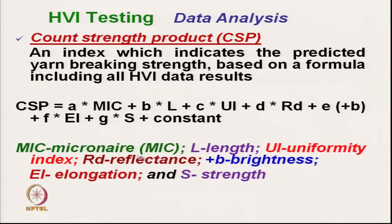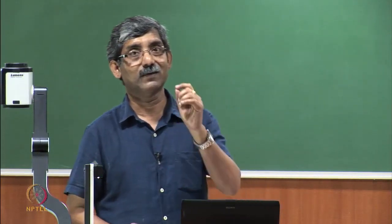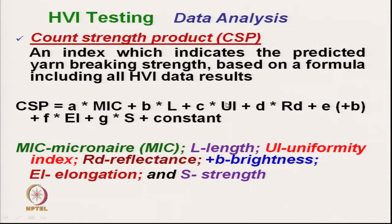In the CSP formula, MIC is micronaire value; along with length, uniformity index, reflectance, brightness, elongation, and strength, multiplied by coefficients A, B, C, D, E, F, G, H. For a particular type of fibre, these coefficients are not fixed because CSP also depends on twist level and machine type. A particular industry using HVI data can develop this equation for their particular machine, as the coefficients depend on machine condition and twist level.